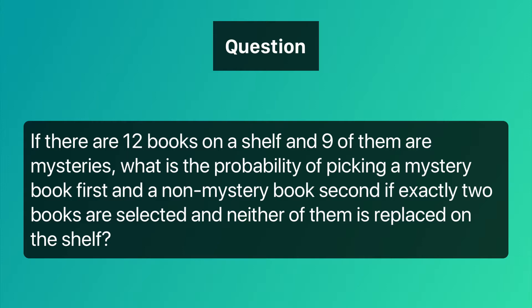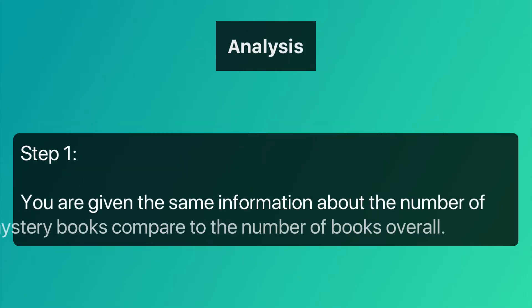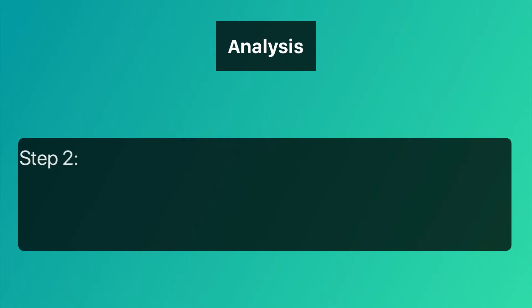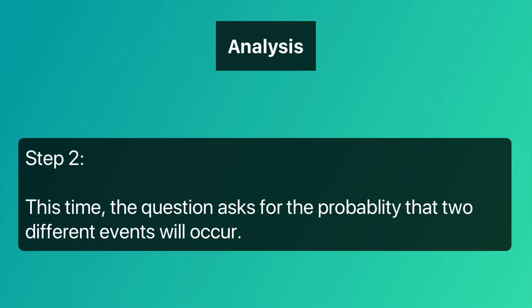If exactly two books are selected and neither of them is replaced on the shelf — step one: you are given the same information about the number of mystery books compared to the number of books overall. Step two: this time the question asks for the probability that two different events will occur.